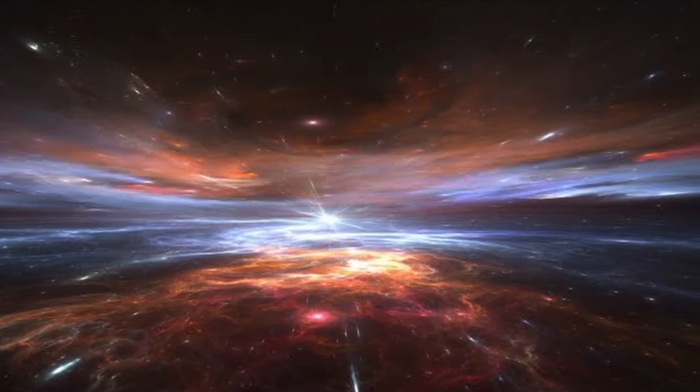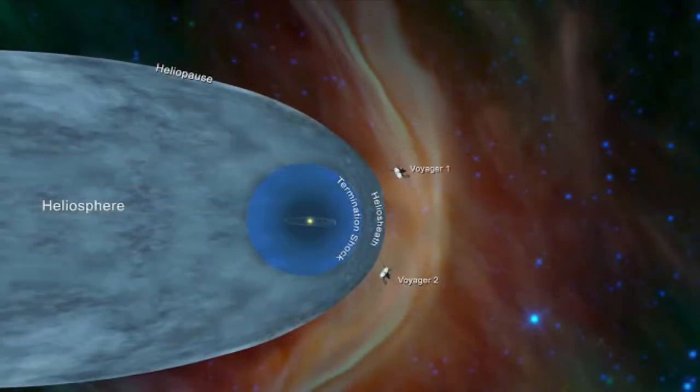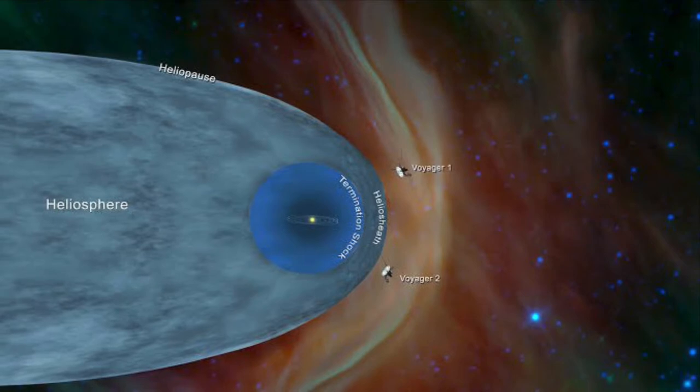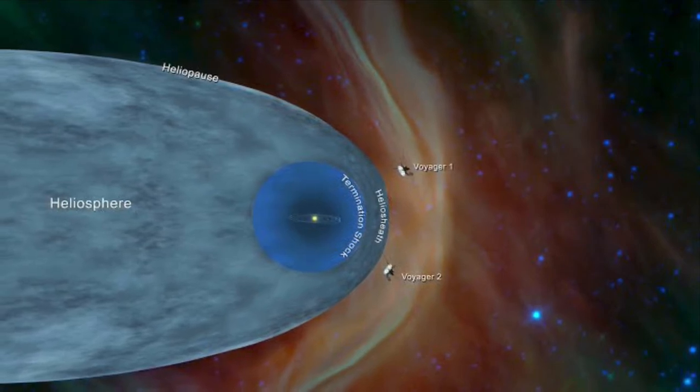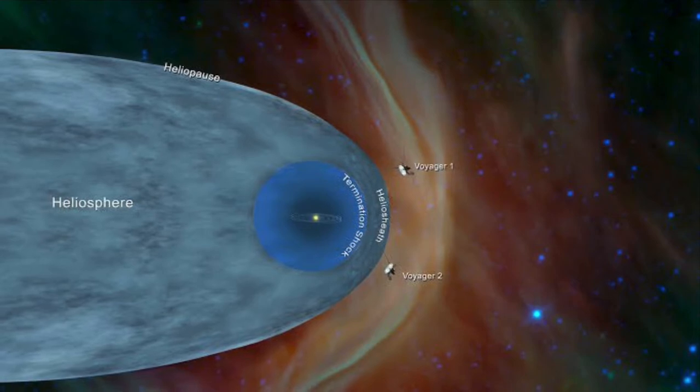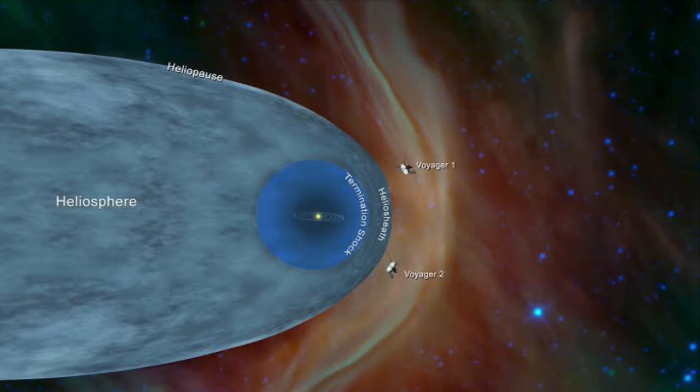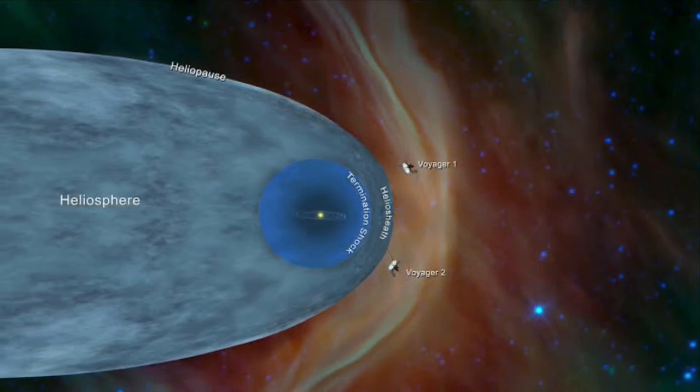Scientists define the beginning of interstellar space as the place where the Sun's constant flow of material and magnetic field stops affecting its surroundings. It's like the place where the Sun's area stops. There is no flow of Sun's energy outside that field or area.